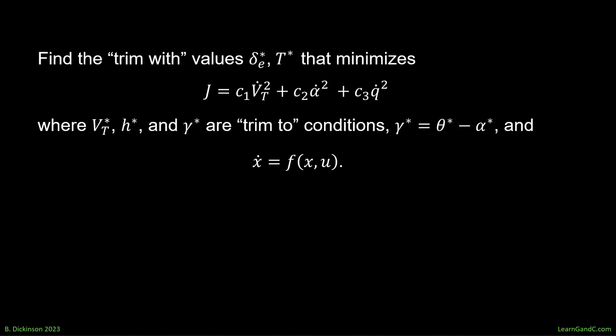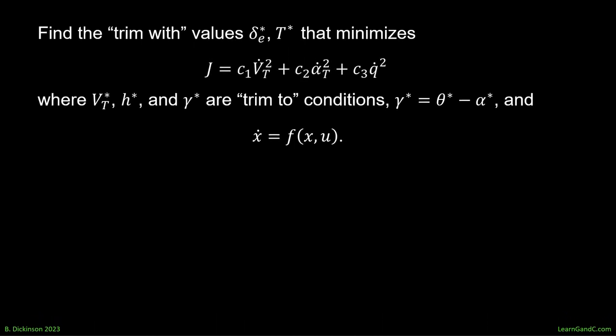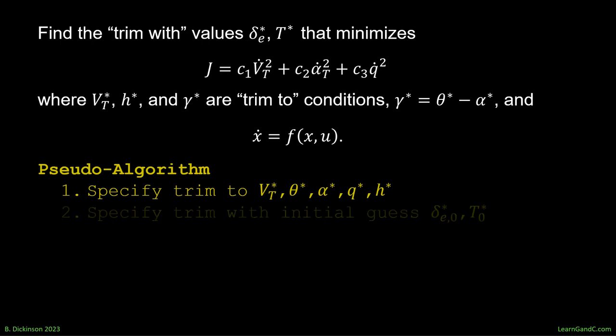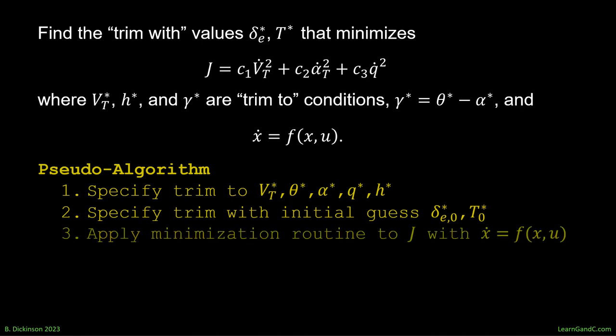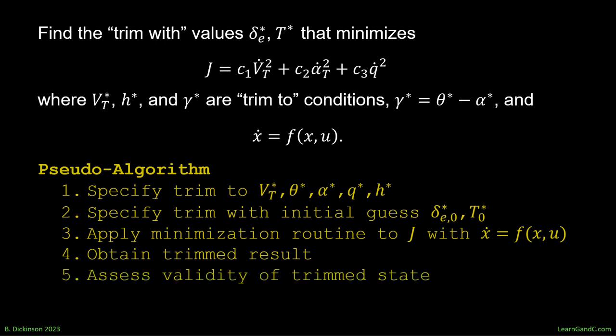The approach is, specify your trim to variables. Specify your initial guess for the trim with variables. Apply the minimization routine to J, with the flight dynamics specified. Obtain the trimmed result from the minimization. Assess the validity of the result. And, if valid, then accept and store the result. The nuance is assessing the validity of the trimmed result.